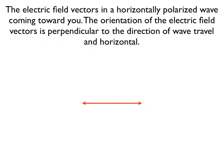Imagine a horizontally polarized light wave coming straight toward your eye. The electric field vectors forming the crests and troughs would wiggle back and forth horizontally left to right. The entire electric field stays in the same plane and that plane is oriented horizontally. This is a horizontally polarized wave.